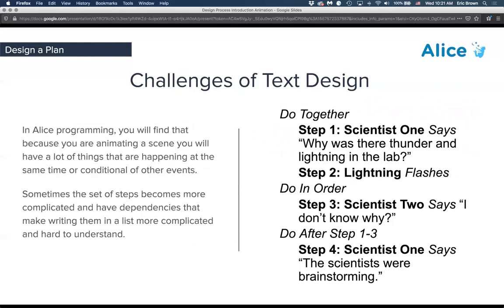One of the challenges of text-based design is when things happen at the same time, conditionally, or repeat over and over. The algorithm design on the right shows do-together — two things happening at the same time — and do-in-order, or things happening conditionally after something else or looped together. This can be a little more challenging to see visually in text, but it is still a completely valid way to approach this.